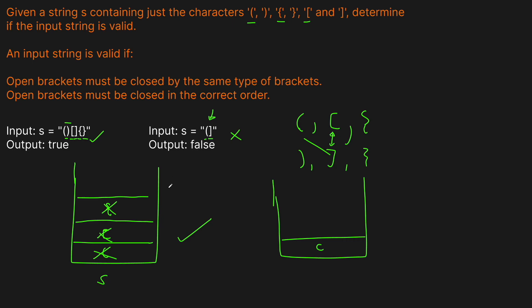Whenever we have a closer, we have to check that the top of the stack has a value. First, the stack can be empty — if we had something that was all right parentheses, there's nothing to compare against, so we return false. We're always checking whether any closer we get matches with whatever is at the top of the stack. If it does, we remove that item from our stack because it has been successfully closed, and we continue moving left to right. There are a few more edge cases we'll cover in the code portion.